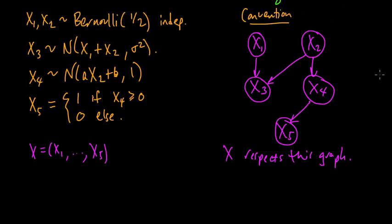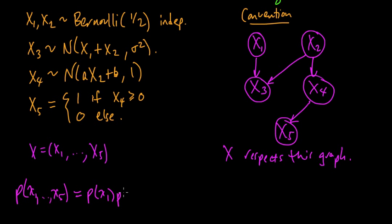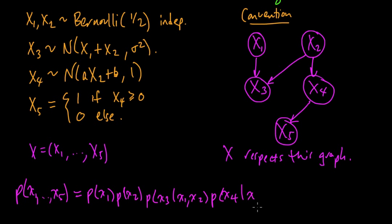Let me just write down what this means - what it means that x respects this graph. That means the joint distribution of x1 through x5 equals the probability of x1, times the probability of x2, times the probability of x3 given x1 and x2, times the probability of x4 given x2, times the probability of x5 given x4. The convention is that when you're using this convention and you say this, you mean that the distribution satisfies this factorization property.